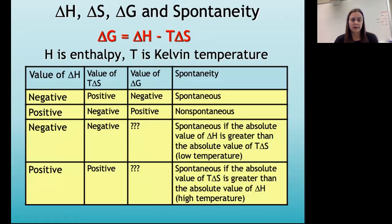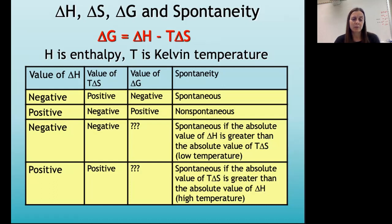On the other hand, if we have a negative change in entropy — so entropy decreases — and we have a positive change in enthalpy, so we have an endothermic reaction, then that is not going to be spontaneous at any temperature. So we have one situation where negative delta H and positive delta S will always be spontaneous, and one set of circumstances where positive delta H and negative delta S will never be spontaneous.